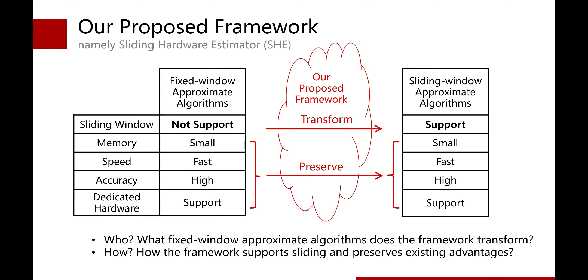The next two questions are, what fixed-window approximate algorithm does the framework transform? We do not have to transform all algorithms. And also, we cannot transform all of them. Second, how we try to devise the framework to achieve this design goal? To answer the first question, we first introduce one approximate algorithm called BloomFilter. And then, we summarize the common characteristics of approximate algorithms.